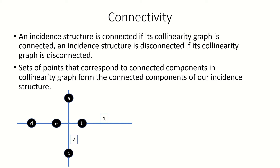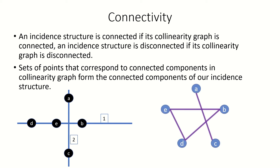As an example, in this incident structure, the collinearity graph is not connected, and it has two connected components. We say that {A, C} and {B, D, E} are the connected components of our incident structure.